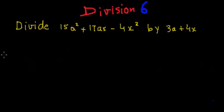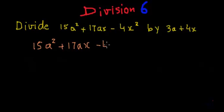So let me rewrite the dividend: 15a squared plus 17ax minus 4x squared. The first thing we have to do is rewrite this expression in the descending order of one variable. This expression has two variables, a and x, and it is already arranged in descending order of variable a — the powers of a are 2, 1, and 0 respectively.